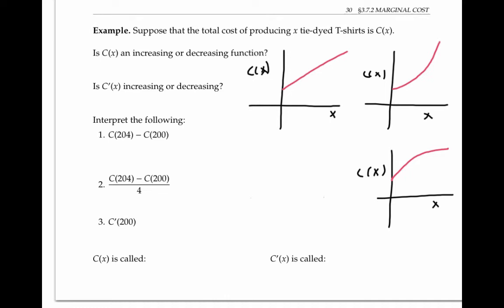So this function right here is the one whose slope is going down for larger x's. And so I would say that this is the most reasonable representation for C(x) as a function of x.